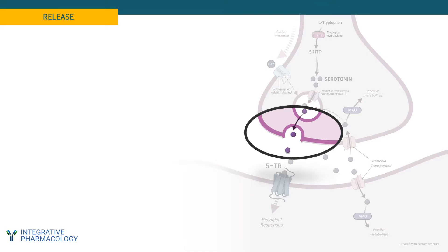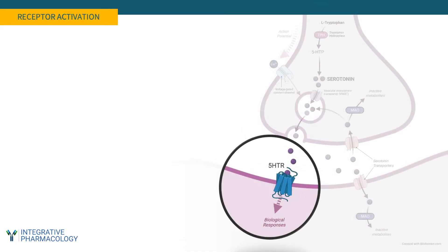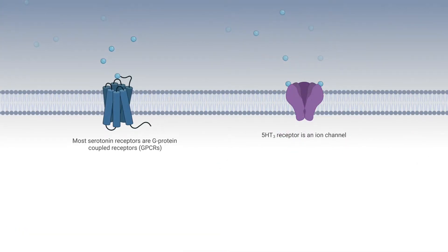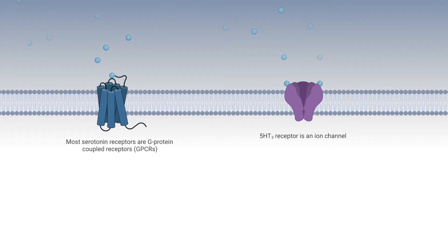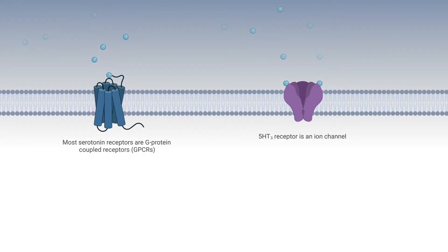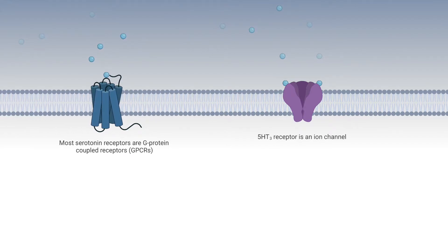Once it's in that space, it's free to bind to serotonin receptors. Most of them belong to the G-protein coupled receptor family, with the exception of one of them called the 5-HT3 receptor, which is an ion channel.